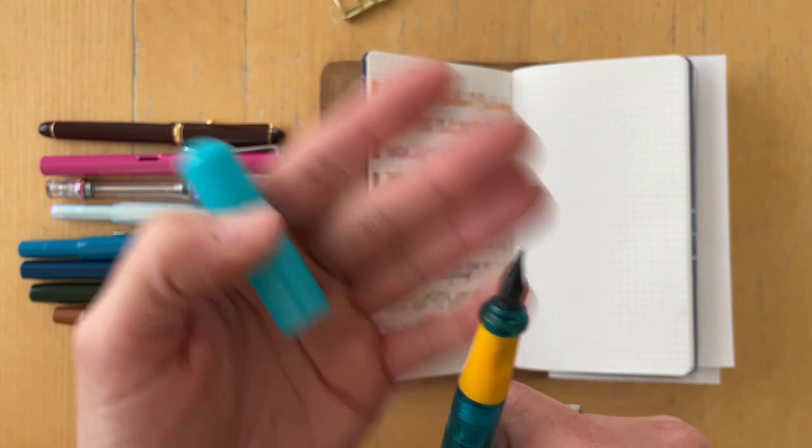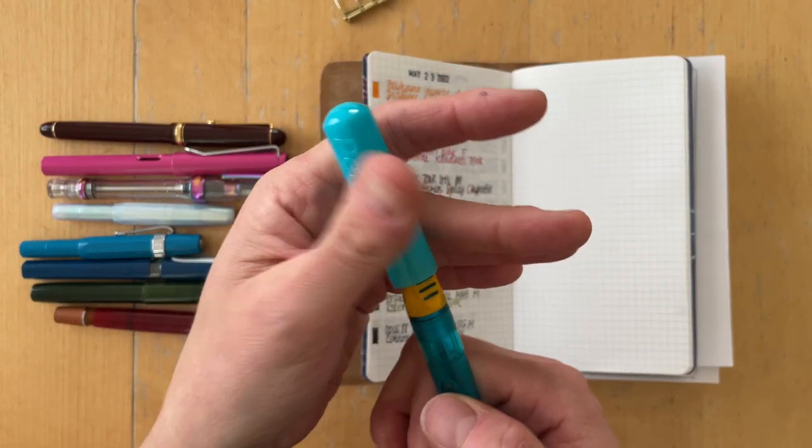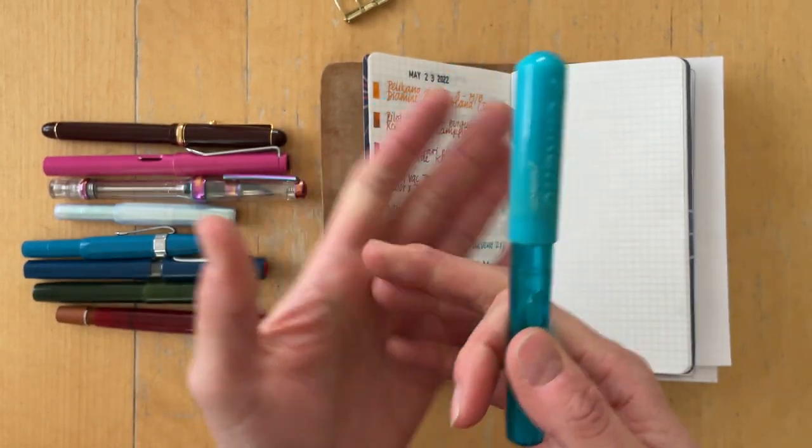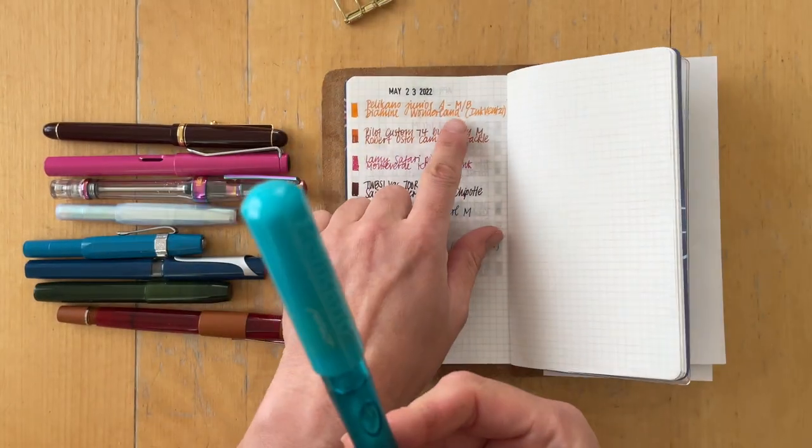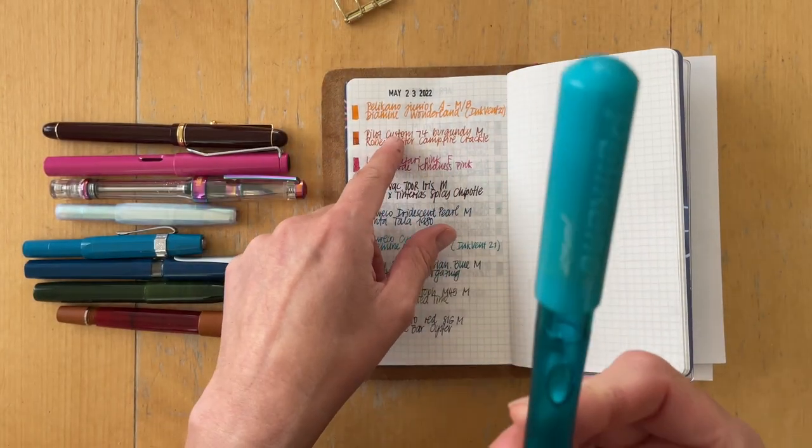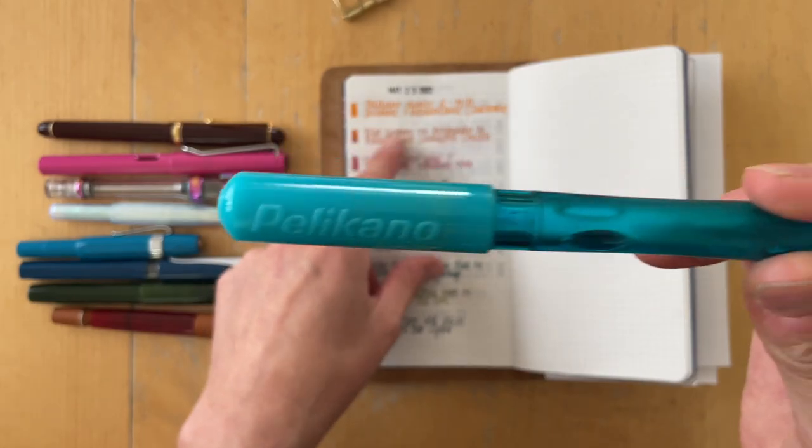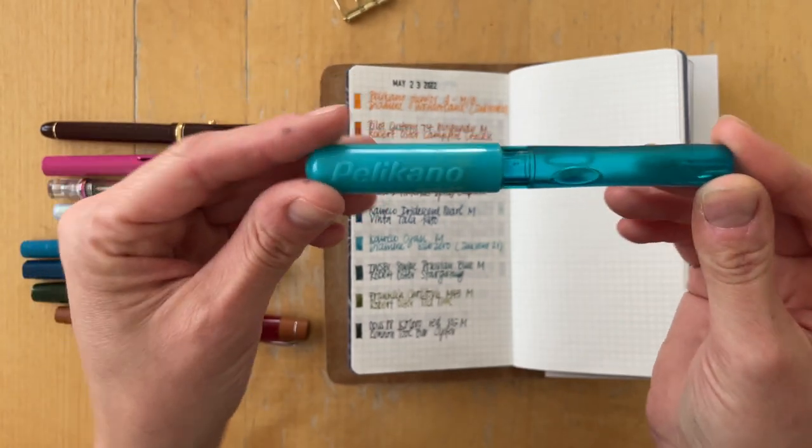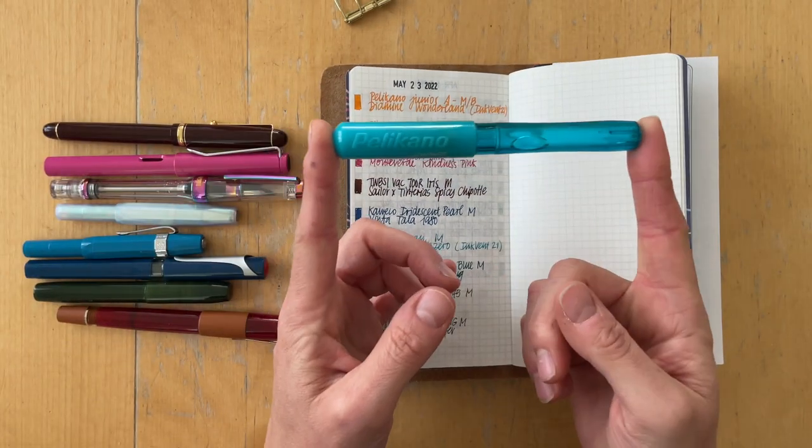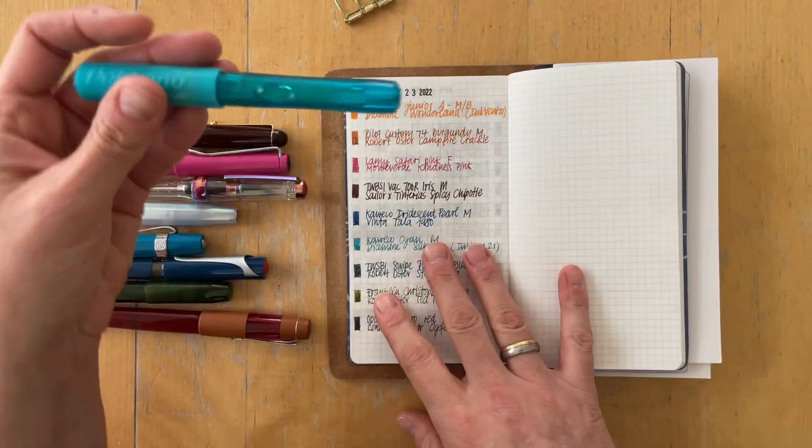I would put this into a medium or broad, depending on which way you look. If it's Japanese, then probably broad, medium more if you look at it as a German nib. And since Pelikan is from Germany, so I guess I would say this is a medium nib.